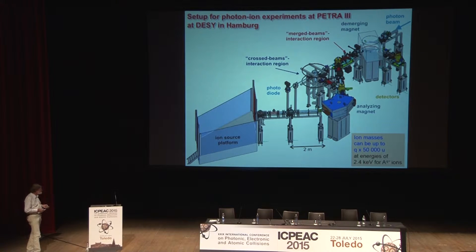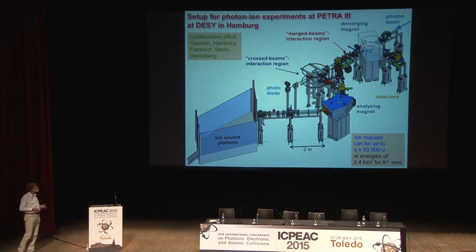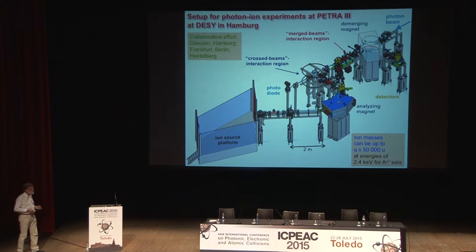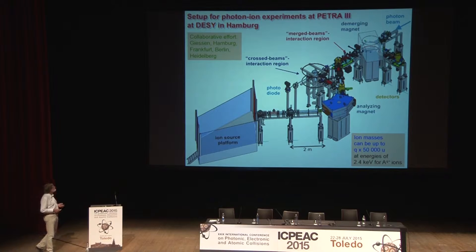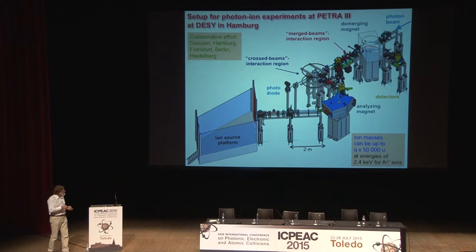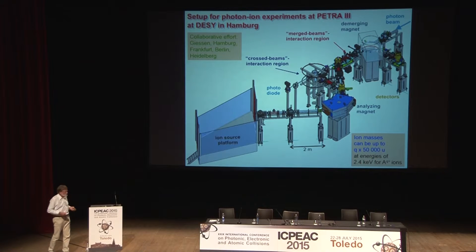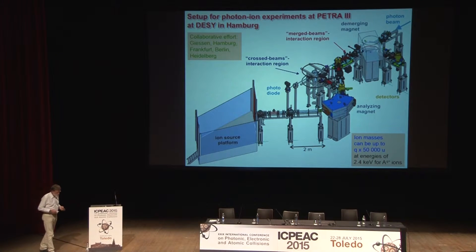The whole setup was assembled in a collaborative effort of our group in Gießen with colleagues from Hamburg, Frankfurt, Berlin, and Heidelberg. The energy range that can be covered with this photon beam is about 252 eV to 3 keV, so we can look at K-shell processes.